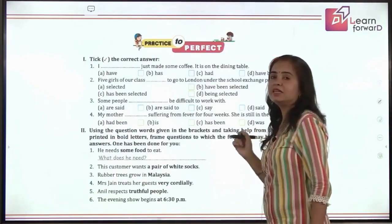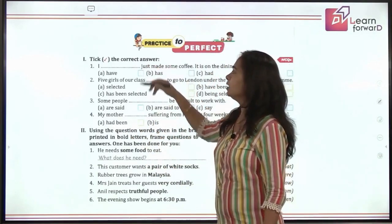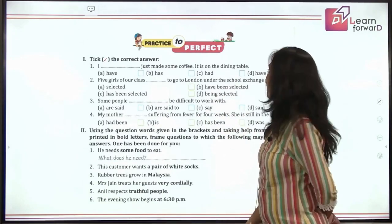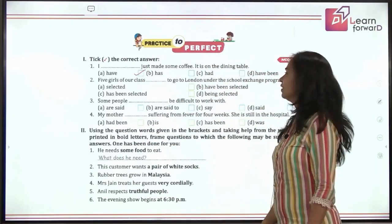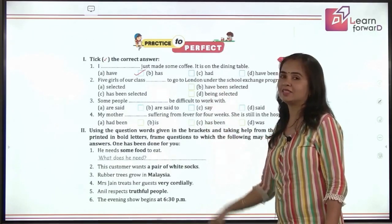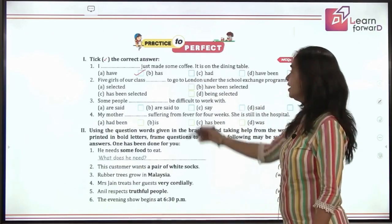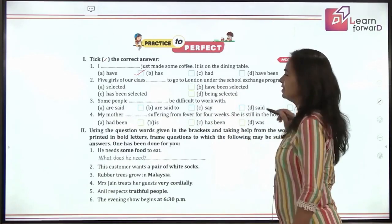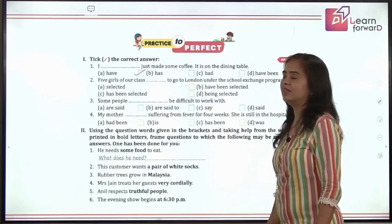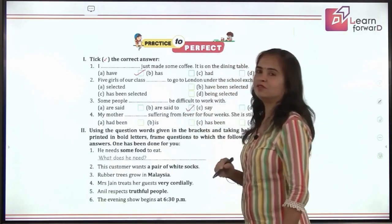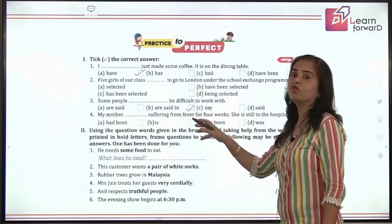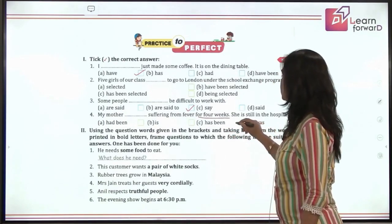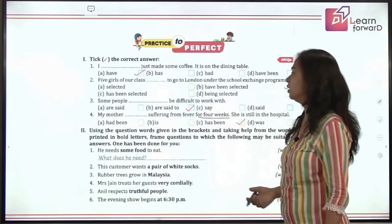It's time to practice. First: I dash just made some coffee — the correct answer is 'I have just made.' Next: Five girls of our class — plural subject — the correct answer is 'have been selected.' Next: Some people dash be difficult to work with — 'are said to be difficult.' Finally: My mother dash suffering from fever for four weeks — she is still in hospital, so we use present perfect continuous: 'has been suffering.'